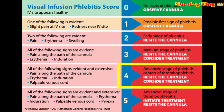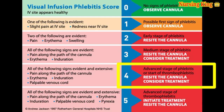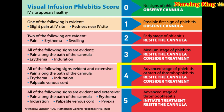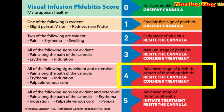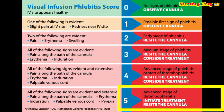Score 4 is the advanced stage of phlebitis, and thrombophlebitis may also start at this stage. In this stage, pain along the cannulation site, erythema, palpable venous cord, and severe pain are present.